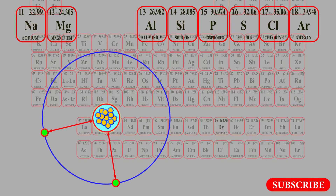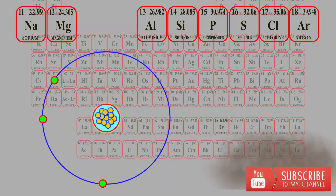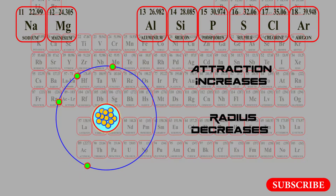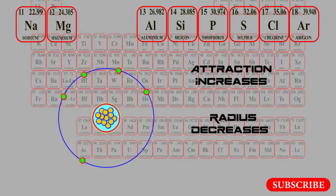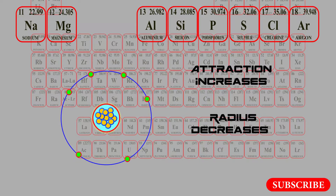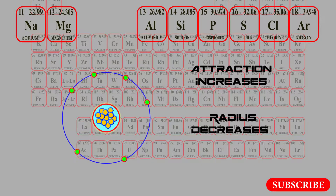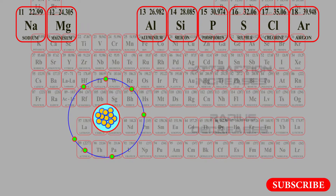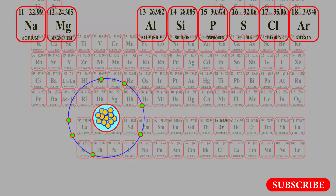Hence the atomic radius decreases to some extent. If we move further towards the right, for each element one more electron will be added, so the force of attraction goes on increasing and the radius will go on decreasing. We conclude that on moving towards the right in the periodic table, atomic radius decreases.